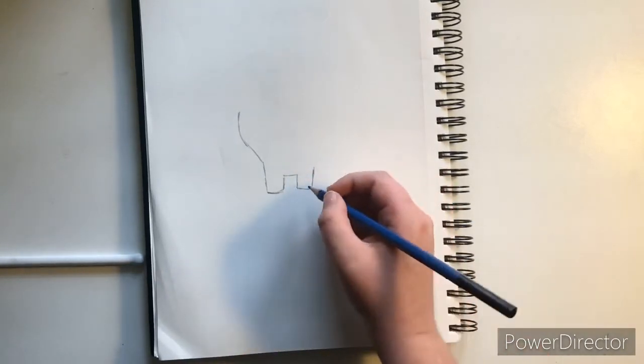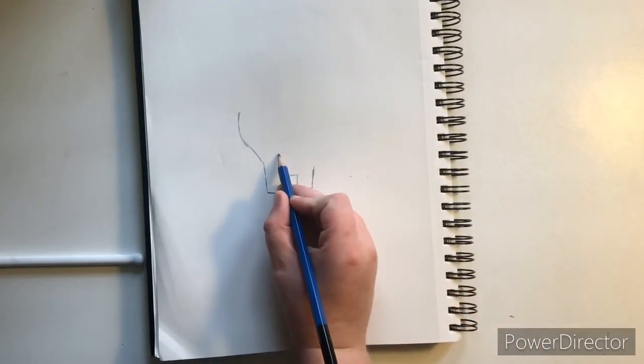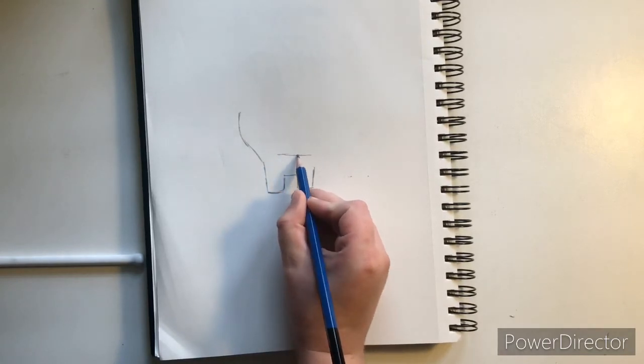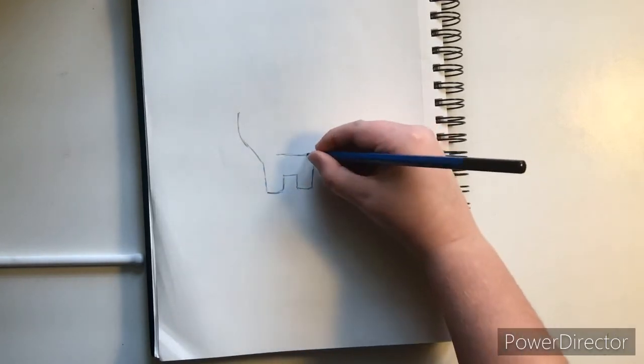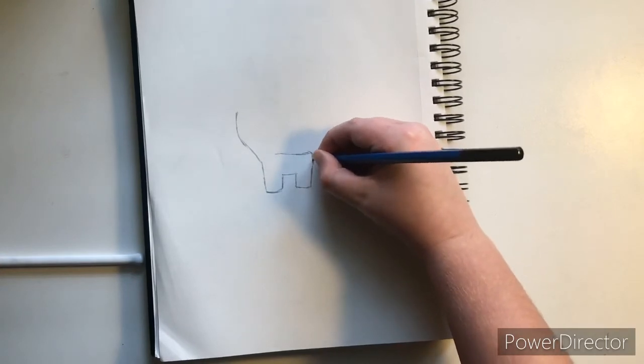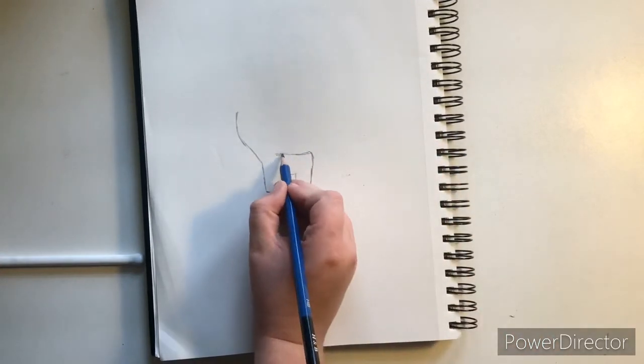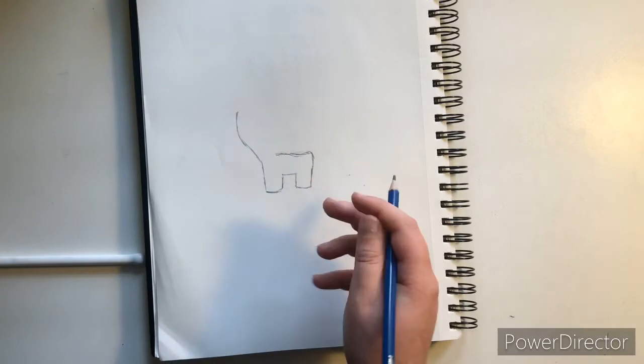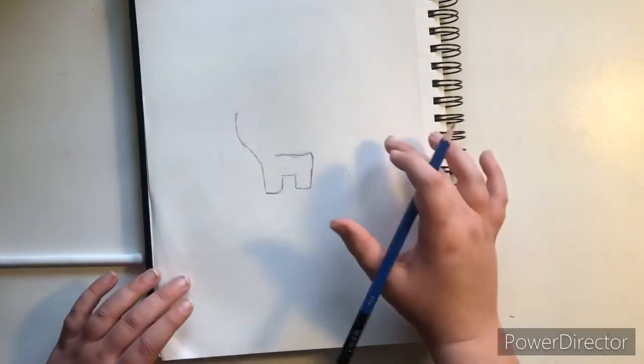And then what you can do is go up here, go across like that, and then connect the lines. And that does not have to be straight because it will be like his mouth opening.